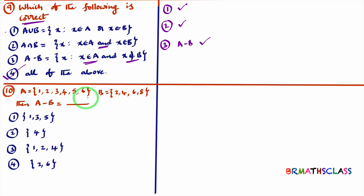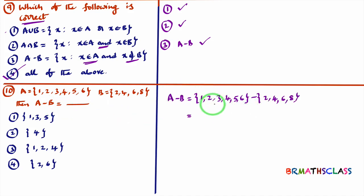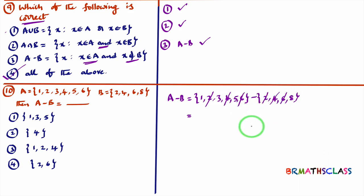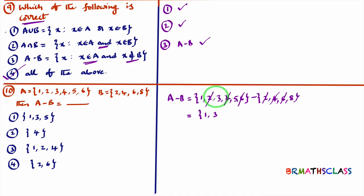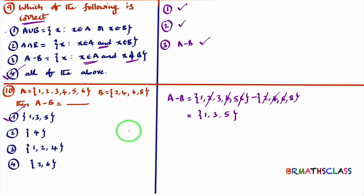Question 10: sets A and B are given, find A - B. A - B means all elements present in A but not in B. The common elements in both A and B are 2, 4, and 6 — we remove these. The remaining elements in A that are not in B are 1, 3, and 5. So A - B = {1, 3, 5}. I hope you understood this class.